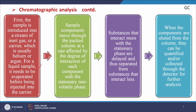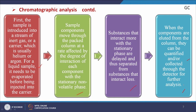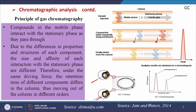The sample is first introduced into a stream of inert carrier gas, which is usually helium or argon. For a liquid sample it needs to be evaporated before being injected into the carrier. Sample components move through the packed column at a rate affected by the degree of interaction of each component with the stationary non-volatile phase. Substrates that interact more with the stationary phase are delayed and thus separated from substances that interact less.